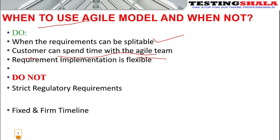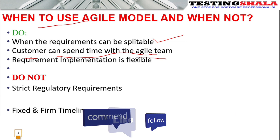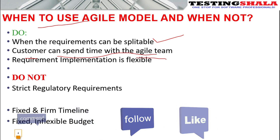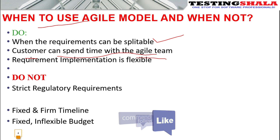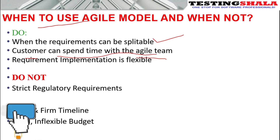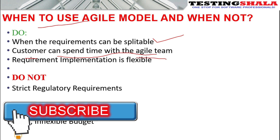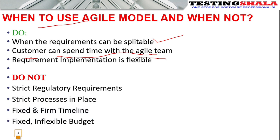Also, if the budget is completely fixed with no scope for increasing or decreasing it, then we cannot use agile. Then the fourth point is when there is a strict process to be followed — in those kinds of projects also you should not use agile methodologies.